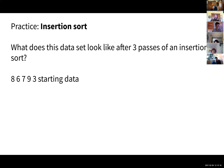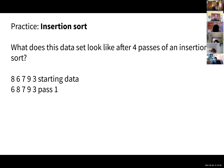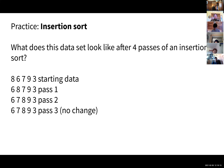Practice with insertion sort: same data set. We start at the second item — the six. Pass one: six is less than eight, so six goes there and eight bumps over. Pass two: we check the seven — it should go between the six and the eight, so it's placed there and eight bumps over. Pass three: we check the nine — it's already in the right place, nothing changes. Pass four: we check the three — it goes to element zero and everything bumps over. After four passes, this particular data set is fully sorted.